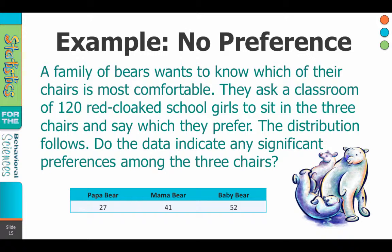Do the data indicate any significant preferences among the three chairs? So what we find is that Papa Bear's chair was chosen as most comfortable 27 times, Mama Bear's chair was chosen 41 times, and Baby Bear's chair was chosen 52 times.